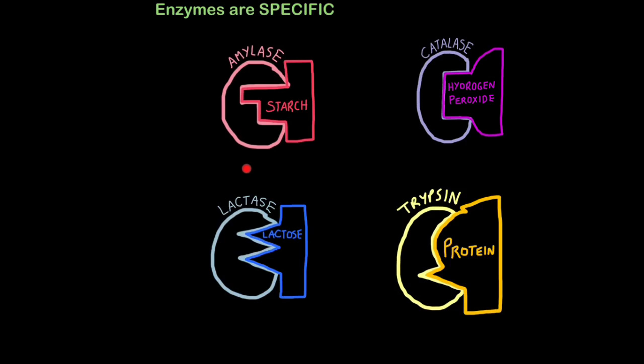People, for example, who are lactose intolerant cannot produce lactase, so they cannot break down milk sugars. As a result, these sugars stay in the gut because they're too large to be absorbed into our bloodstream. Bacteria feed on them and produce gases which causes bloating. The sugars draw out water by osmosis from the bloodstream. So now we have water in our gut as well and that causes diarrhea, all because of one enzyme not working properly.